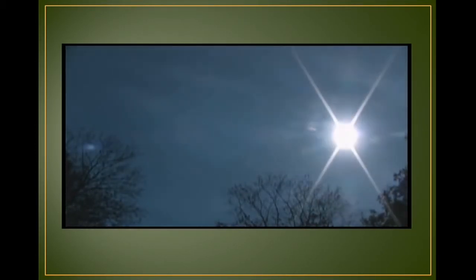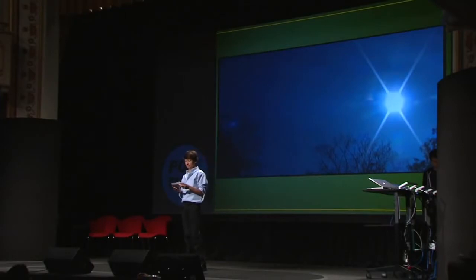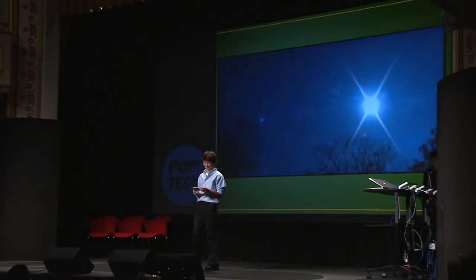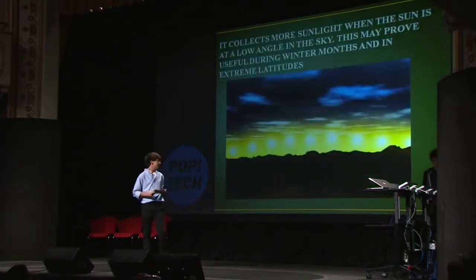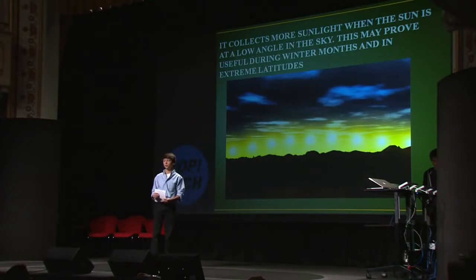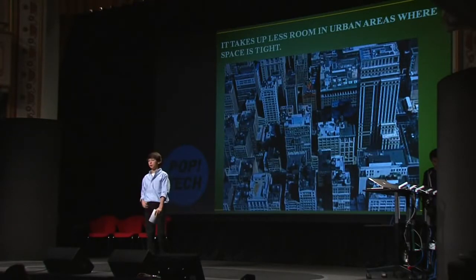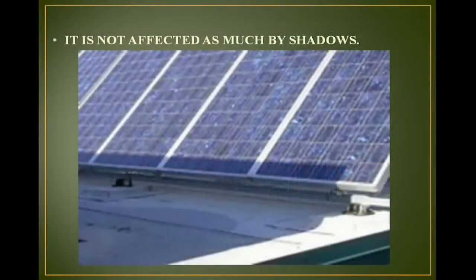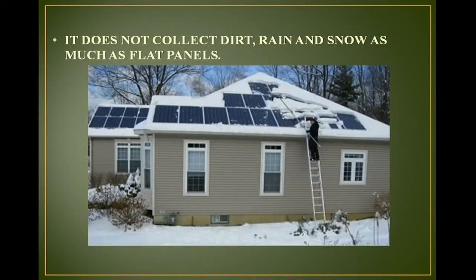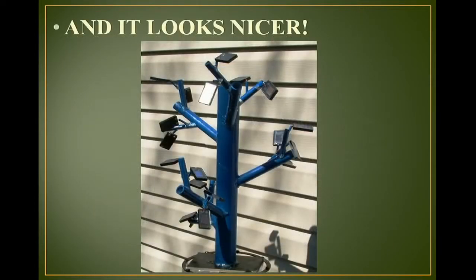I discovered the Fibonacci pattern can allow a tree to track the sun better as it moves through the sky. My results suggest that the Fibonacci pattern can improve solar panel arrays in several ways: it collects more sunlight when the sun is at a low angle in the sky, which may prove useful for winter months in extreme latitudes; it takes up less room in urban areas where space is tight; it is not affected as much by shadows; it does not collect rain, dirt, and snow as much as flat panels; and it looks a lot nicer.